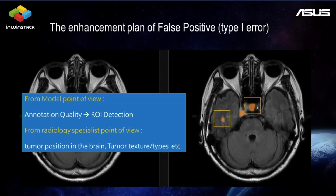Here's a real example of a type 1 error. In our case, after we started to verify the model performance on the testing dataset, we found the sensitivity was not as good as expected due to some noise. From the DICOM image on the right-hand side, you can see two types of errors happened. In general, there is only one tumor in the image, but three tumors were found by the AI model. From a data scientist's point of view, we may check the annotation quality to improve the ability of ROI detection.